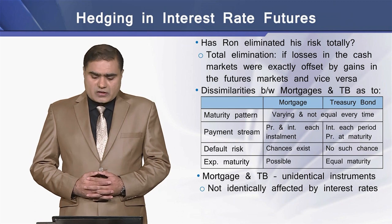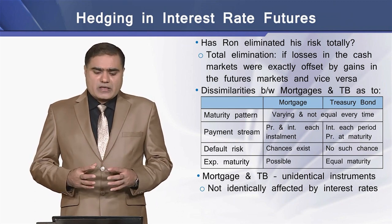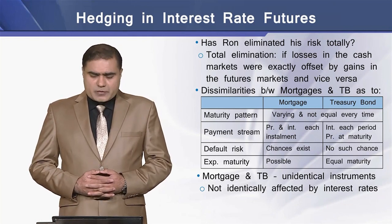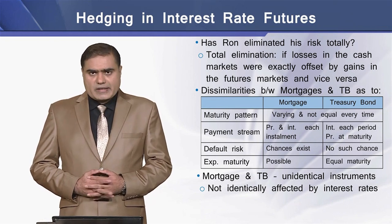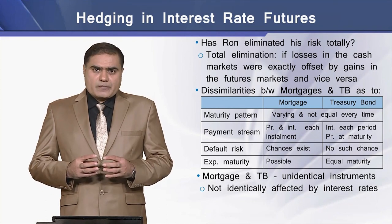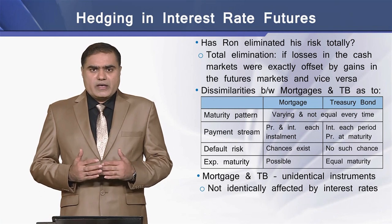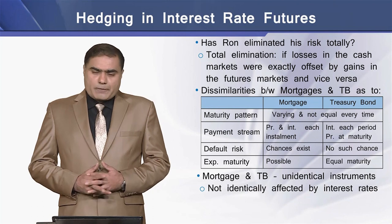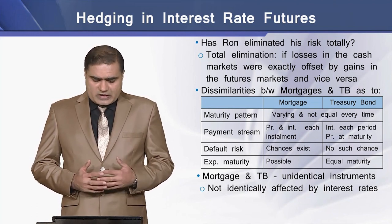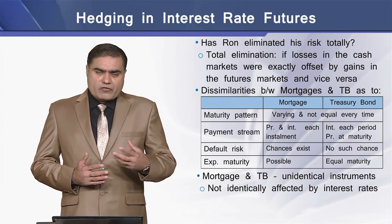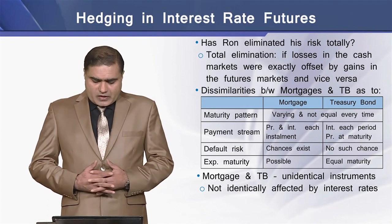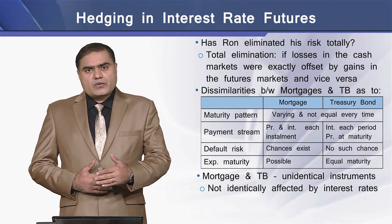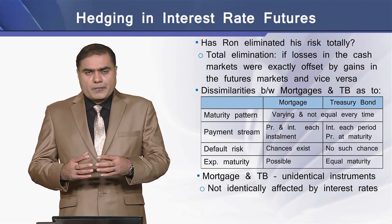Has Ron eliminated his risk totally? His risk has not been totally eliminated, because total elimination would require losses in the cash market to be exactly offset by gains in the futures market and vice versa. This cannot be achieved with Treasury Bonds and a mortgage loan because there are dissimilarities between these two financial instruments — including differences in maturity pattern and payment stream: for loans the payment stream is lump sum, whereas for Treasury Bonds it is periodic.